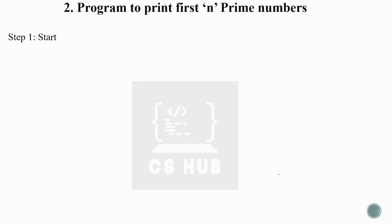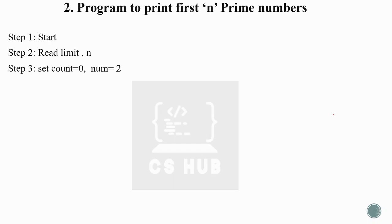Now we have a different problem: print the first n prime numbers. For example, the first 10 prime numbers are 2, 3, 5, 7, 11, and so on. We need a limit variable n, and a count variable to track how many primes we have found.